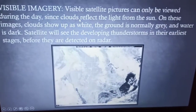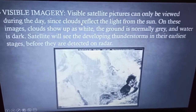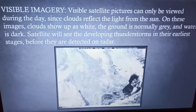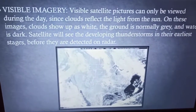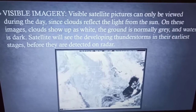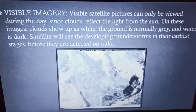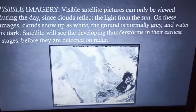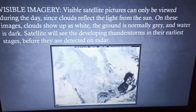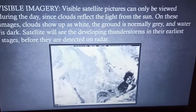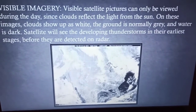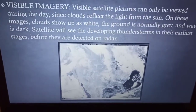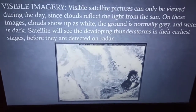Visible imagery pictures can only be viewed during the day, since the clouds reflect light from the sun. In these images, clouds show up as white, the ground is normally gray, and water is dark. The satellite can see a developing thunderstorm in its earliest stage, before it is detected on radar.